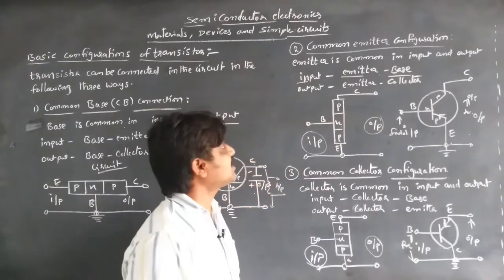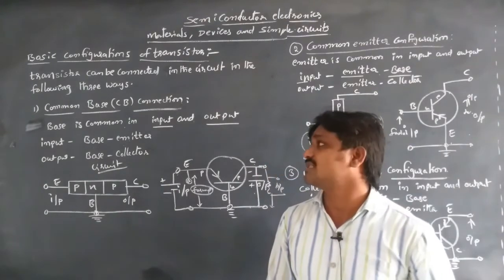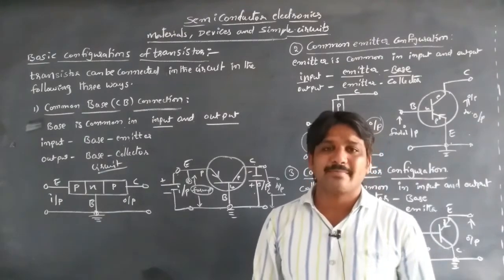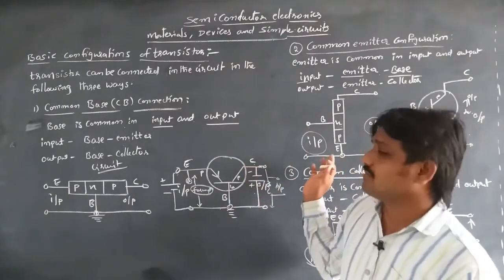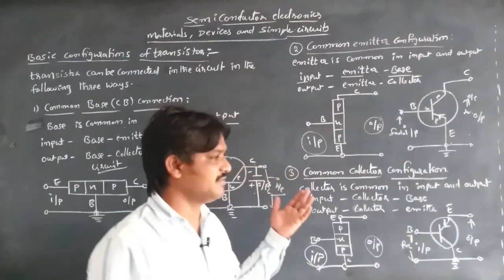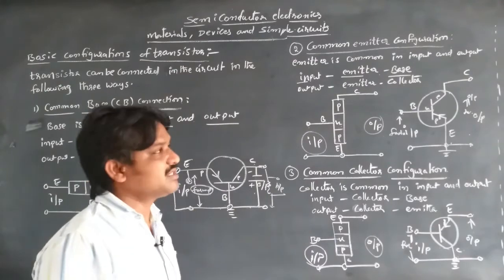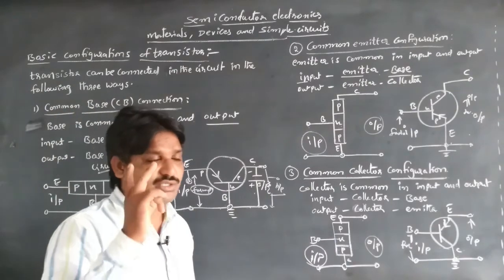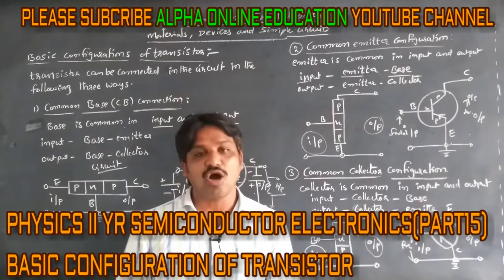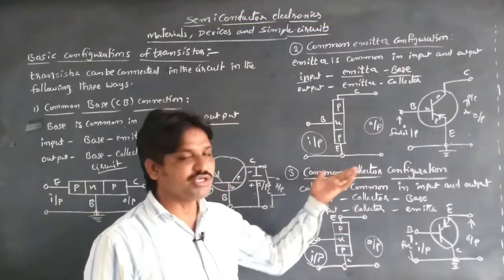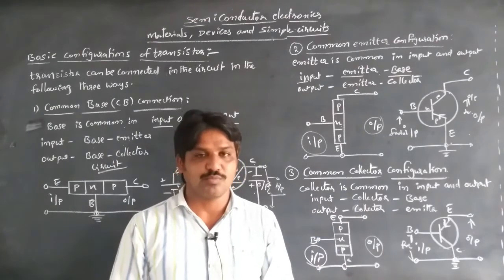Mostly we use the common emitter configuration for the amplification factor. These transistors are used for practical purposes, and while common base and common collector configurations exist, the common emitter configuration is the most widely used. We will next discuss the two types of characteristics in the common emitter configuration: input characteristics and output characteristics, where we can observe how increasing the input affects the output.